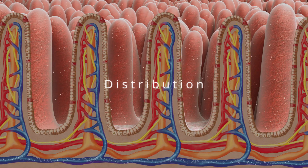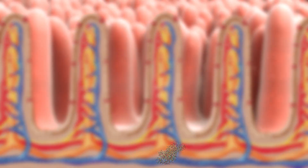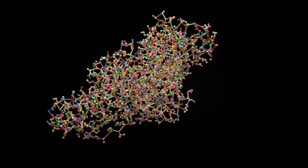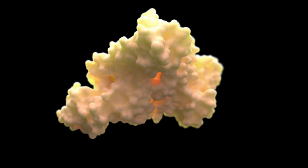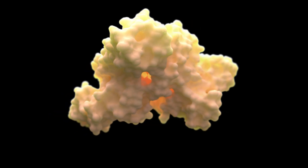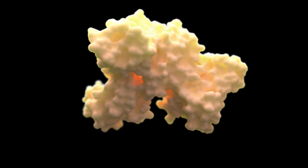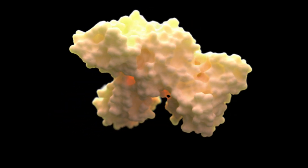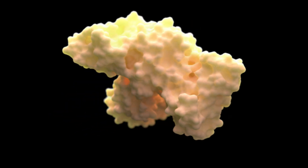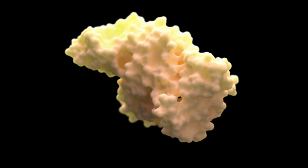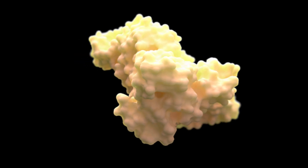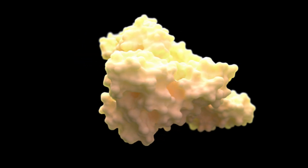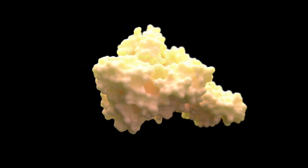Distribution. Blood plasma contains complex molecules called albumin. Albumin is a protein made by the liver which transports nutrients around the body. Albumin also binds to drugs that enter the bloodstream.